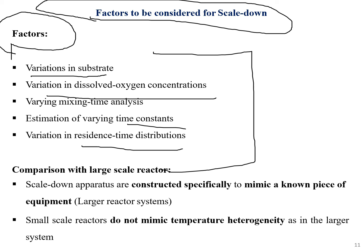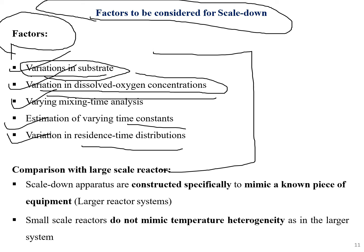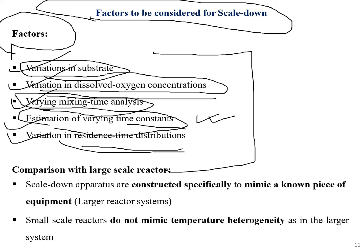Scale up is important when increasing volumes, as larger fermenters provide more reliable data. Scale down is considered when there is variation in substrate or mutation, variation in dissolved oxygen concentration, improper mixing requiring a smaller scale, or when time constants can be better estimated at small scale.